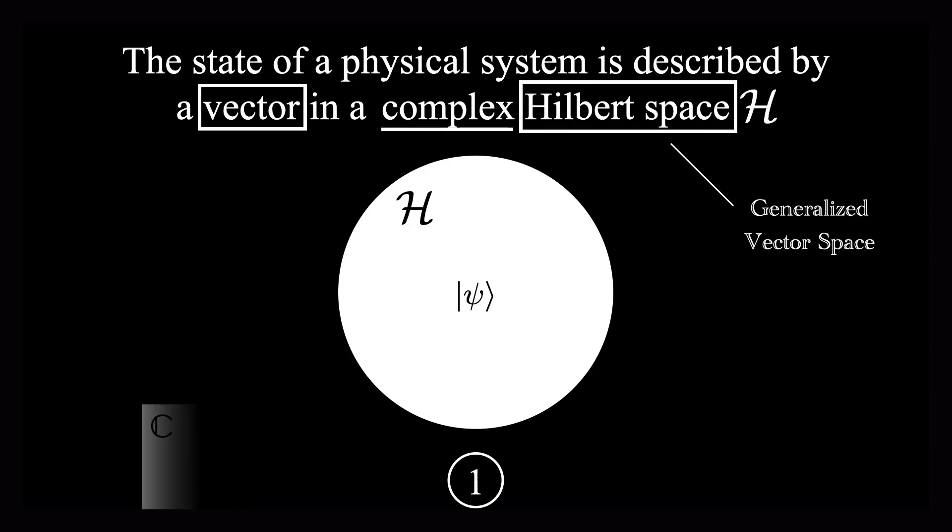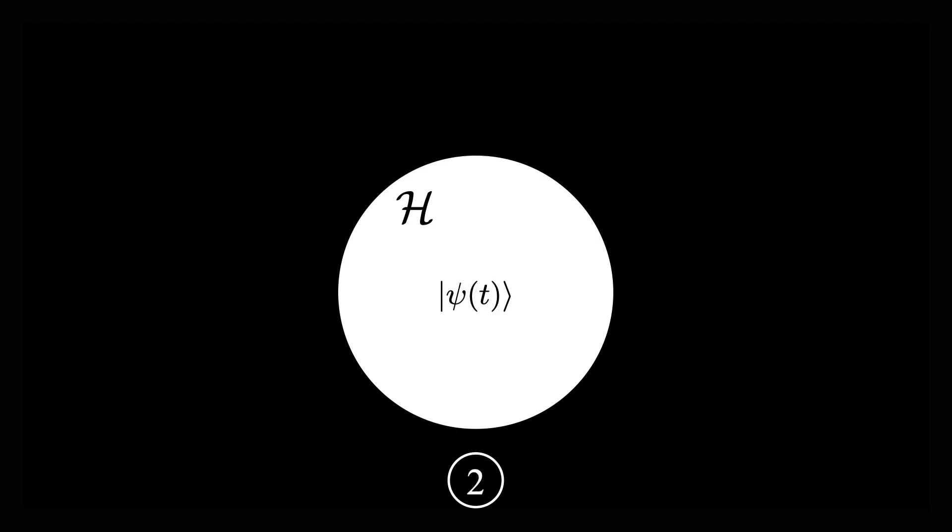One final note about vectors. Since the state of a system generally changes over time, these will be time-dependent. So that's it for the first axiom, which tells us how to describe states.